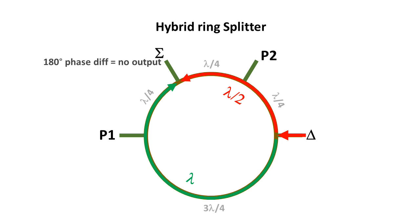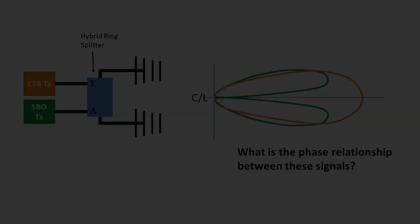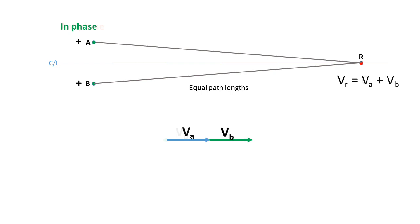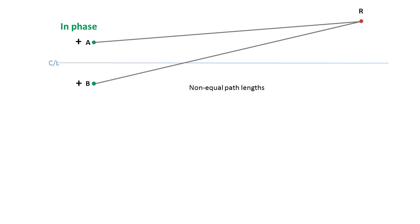Now we need to look at the phase relationship between the signals in the main beam CSB and the two lobes of the SBO signal, considering some vectors. In a plan view the two antennas are represented as point sources equally spaced either side of the centreline. With both A and B in phase, at receiving point R on the centreline equal signals are received and the vectors add to produce a 2VA resultant. With A and B in antiphase the two vectors oppose each other and no resultant signal appears — a null on the centreline. At a location R displaced above the centreline, there's a path length difference shown as alpha degrees phase lag from antenna B. VB lags by alpha degrees and the vector addition resultant lags by alpha/2 at this displacement.